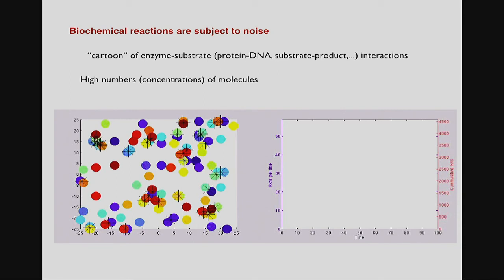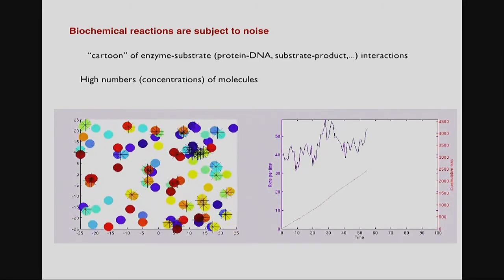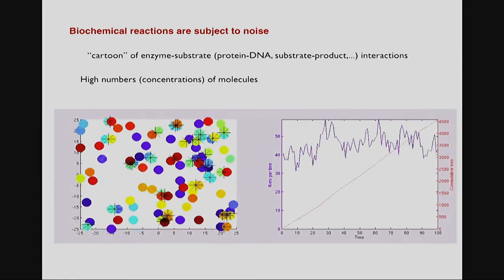In many biological systems this is an issue because we have to deal with small numbers and noise. In cells we have many elements: DNA, which gives you genes; proteins; enzymes. These come together and interact through chemical reactions. If you have a lot of elements, there are a lot of reactions taking place at a given time. This is the mean number of reactions per time and this is the cumulative number. The cumulative number grows steadily, giving a smooth increase in proteins — in this example, about 40 reactions per time unit.